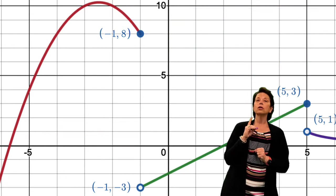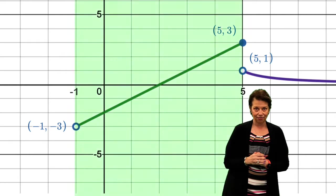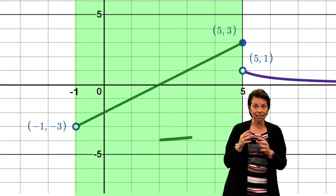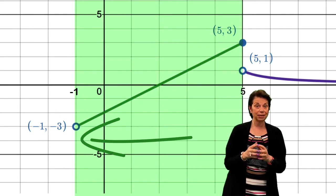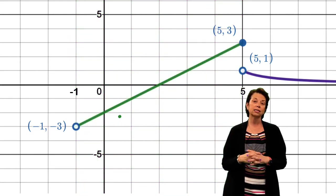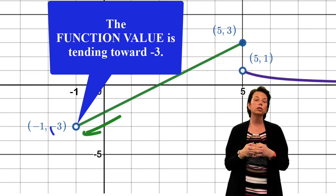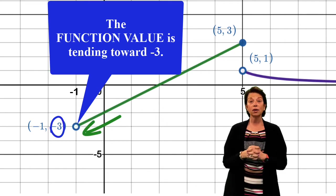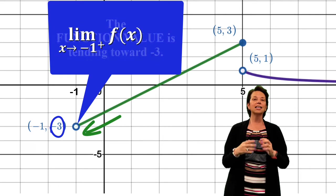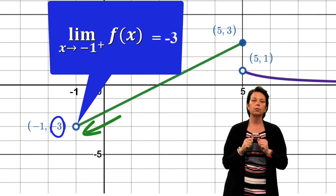Now if we look at the limit as x approaches negative 1 on the right side, imagine getting super close to negative 1 but this time on the right-hand side. We can see that the function itself, the value that we get as the output, is tending towards negative 3. So in that case, we would say the limit as x approaches negative 1 from the right side is simply equal to negative 3.